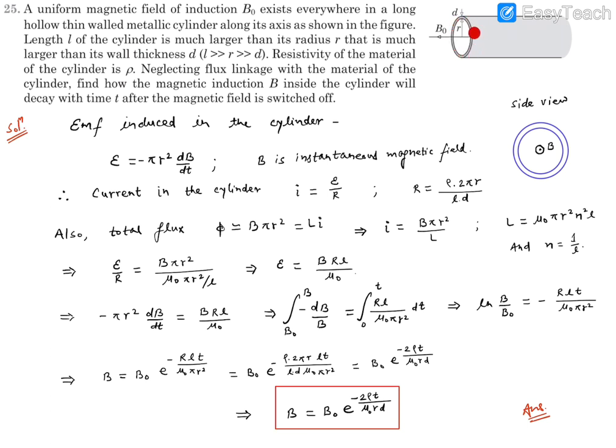Where ρ is the resistivity, L is the length the current travels. The current will go on this circumference, on this curved path in circumference fashion, so the length it travels is 2πr. The cross-sectional area is the d thickness times length, so it will be L·d. This will be the resistance.